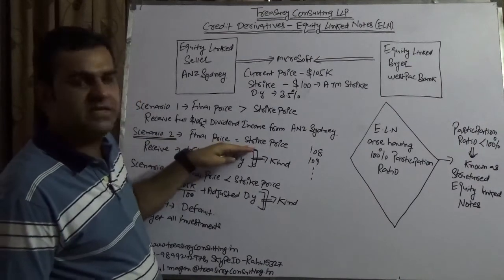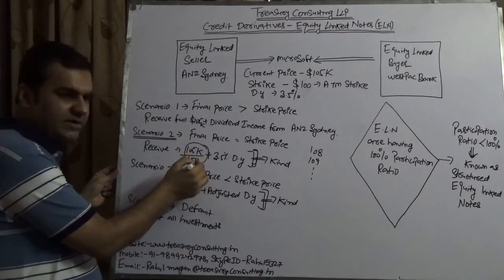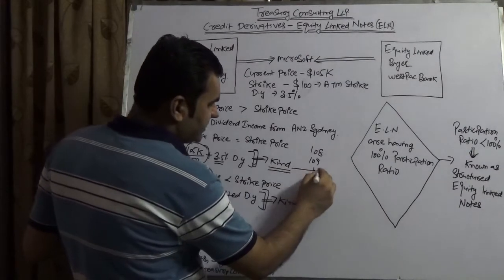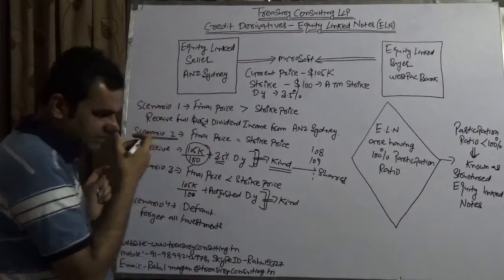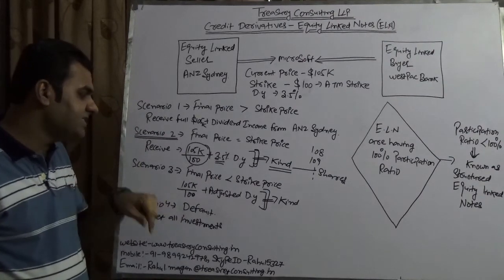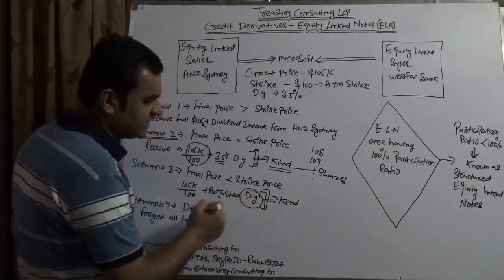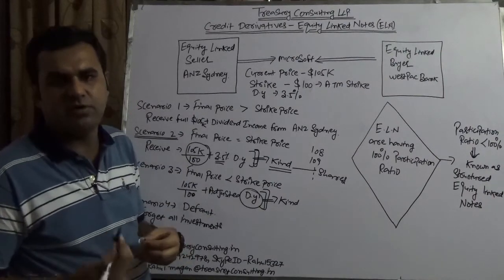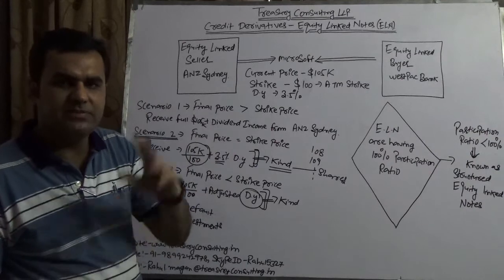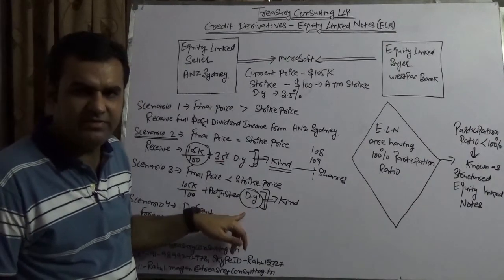Scenario two: if the final price equals the strike price, then the payout is 105K divided by 100, plus 3.5 percent dividend yield. This gives the total number of shares, notes, or bonds they are going to receive. Scenario three: if the final price is less than the strike price, the formula remains 105K divided by 100, but the dividend yield is adjusted accordingly. That formula varies from bank to bank — whether it is Westpac versus ANZ, Goldman Sachs versus Credit Suisse, HSBC versus Bank of America, or Citi versus Deutsche. This adjusted dividend yield formula is very important.